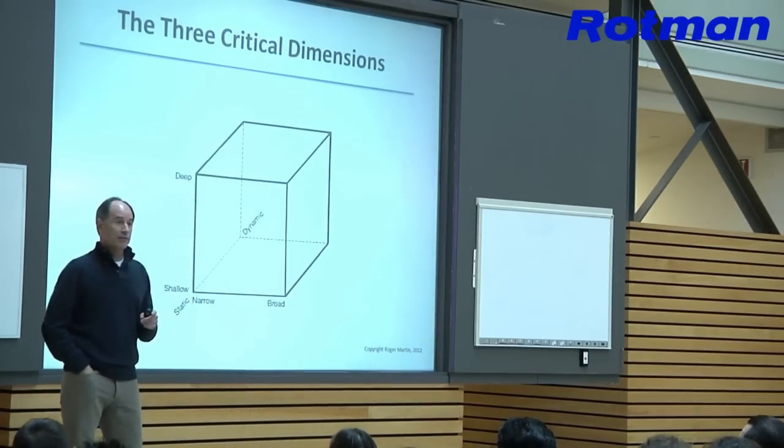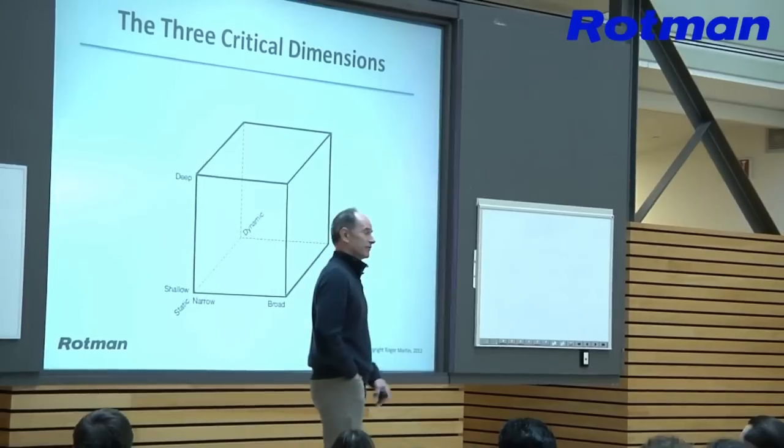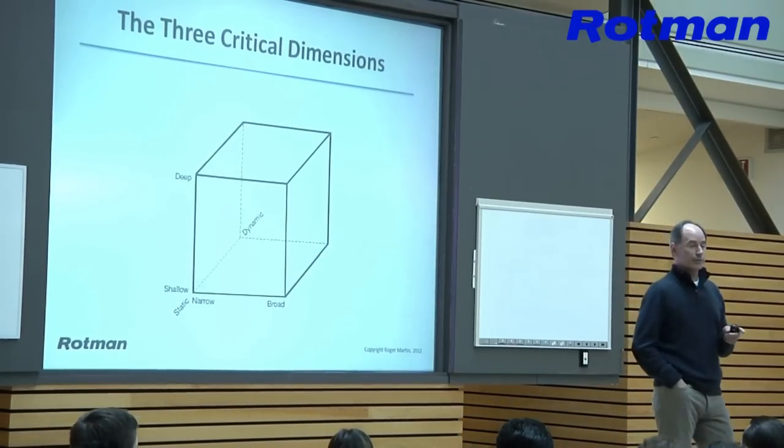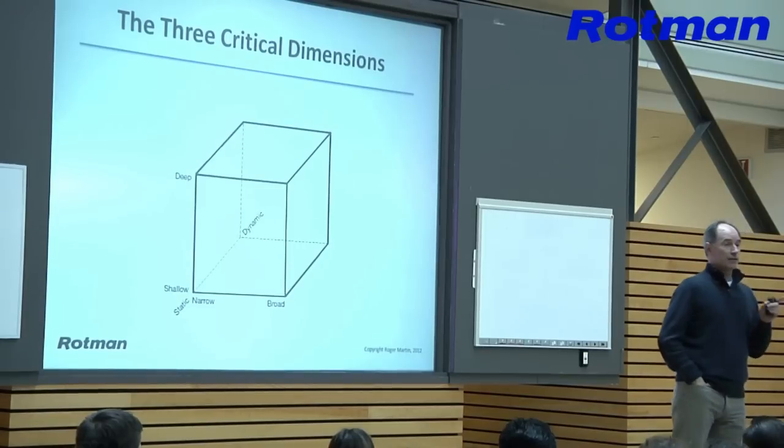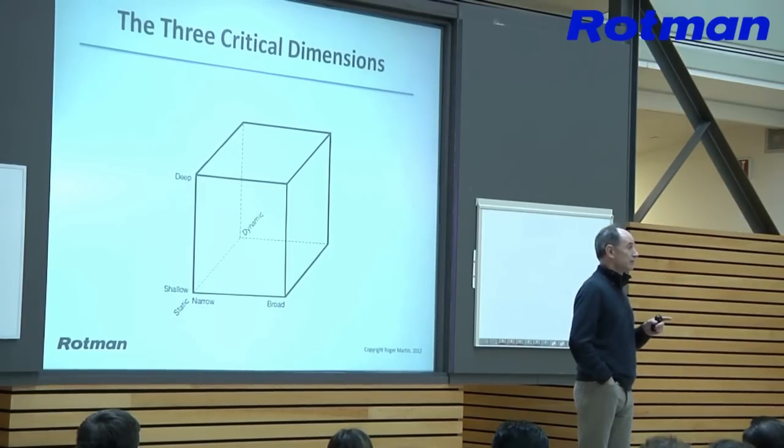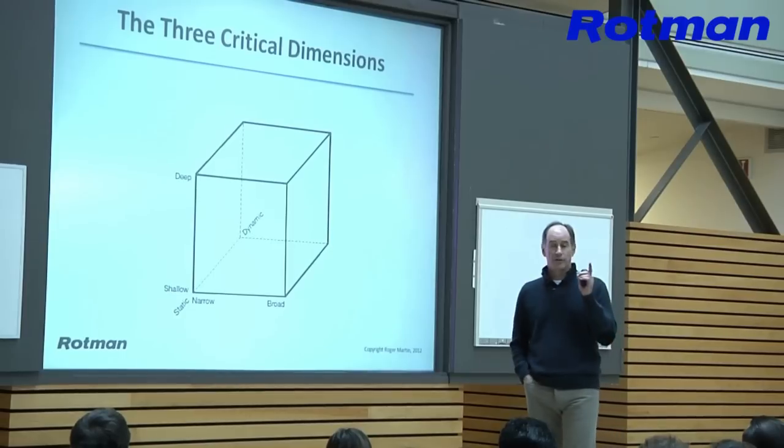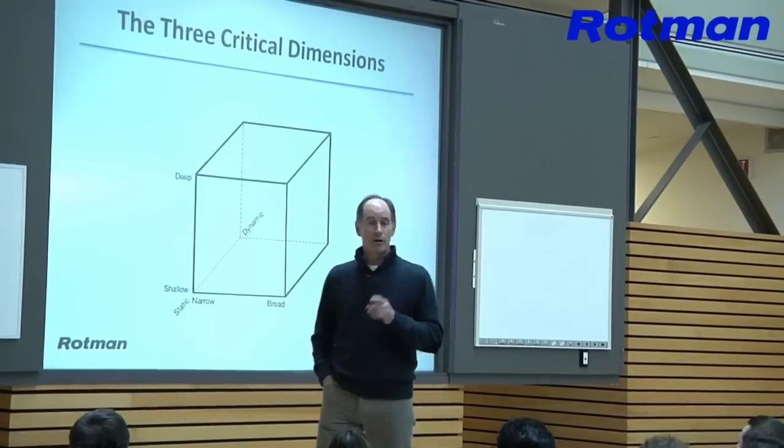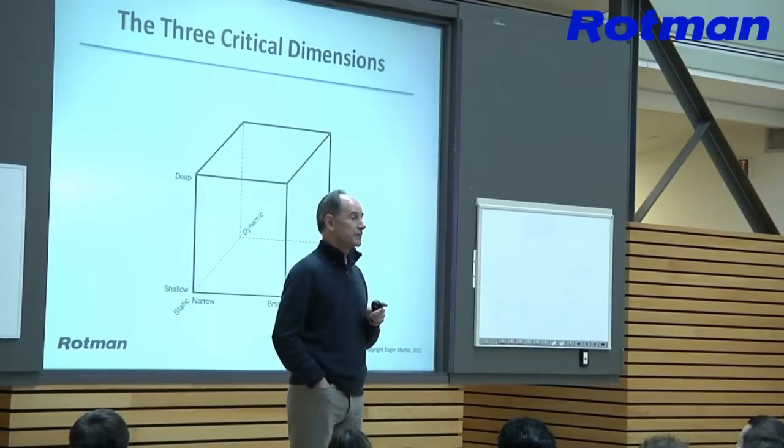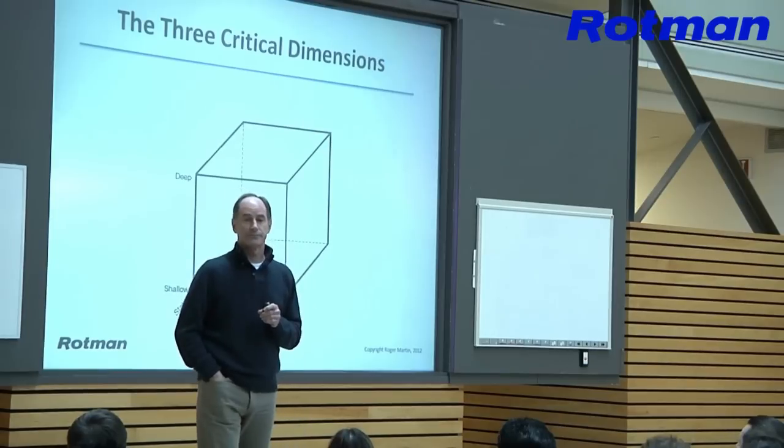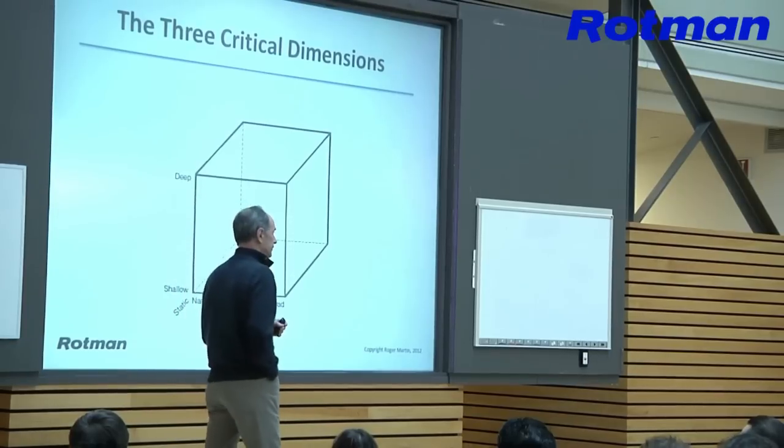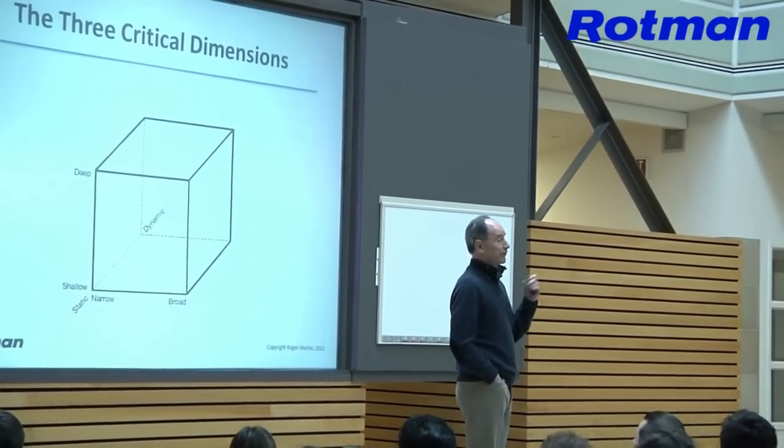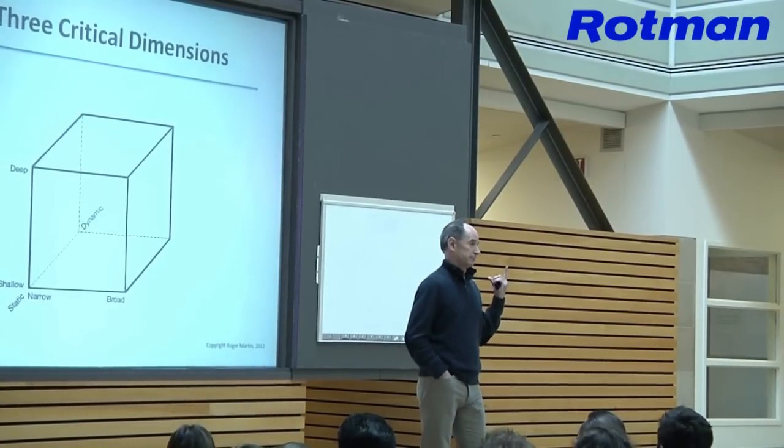But interestingly enough, if you read what Fisher Black and Myron Scholes actually said, they said, you know what, if you would like to value an option on a non-dividend paying stock, and an option of less than six months duration, and a European, not American, call option, use this formula. Now, and they said, and if it's anything else, this ain't a good idea. Don't do it.